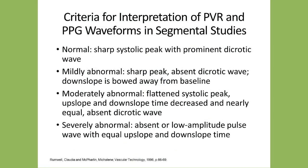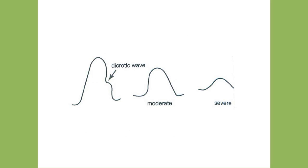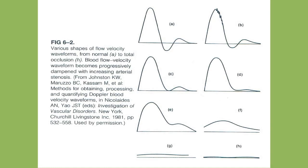Criteria for interpreting PVR and PPG waveforms: Normal has a short systolic peak with a prominent dicrotic notch. Mildly abnormal shows a sharp peak with absent dicrotic notch and the downslope moves away from baseline. Moderately abnormal shows flattening with upslope and downslope times becoming nearly equal and absent dicrotic notch. Severely abnormal shows absent or low pulse wave with equal upslope and downslope times. A classification system from Nicolaides breaks waveforms into eight types — the top two (A and B) are normal, C and D are mild disease, E and F are moderate, and the bottom two are severe — though differentiating all eight levels clinically can be difficult.